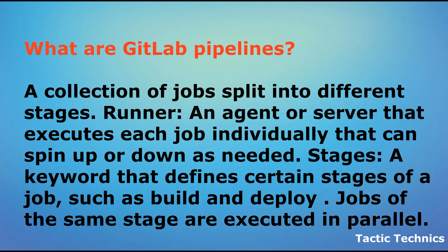What are GitLab pipelines? A collection of jobs split into different stages. Runner: an agent or server that executes each job individually that can spin up or down as needed. Stages: a keyword that defines certain stages of a job, such as build and deploy. Jobs of the same stage are executed in parallel.